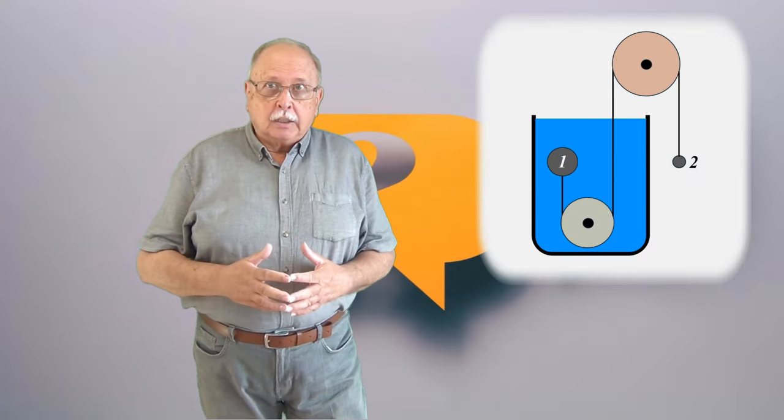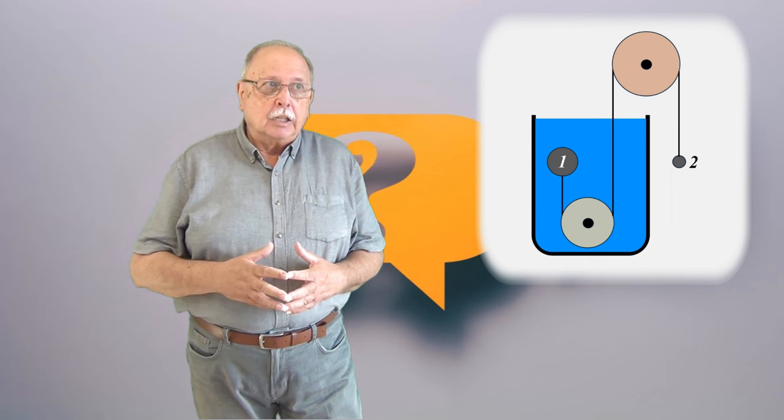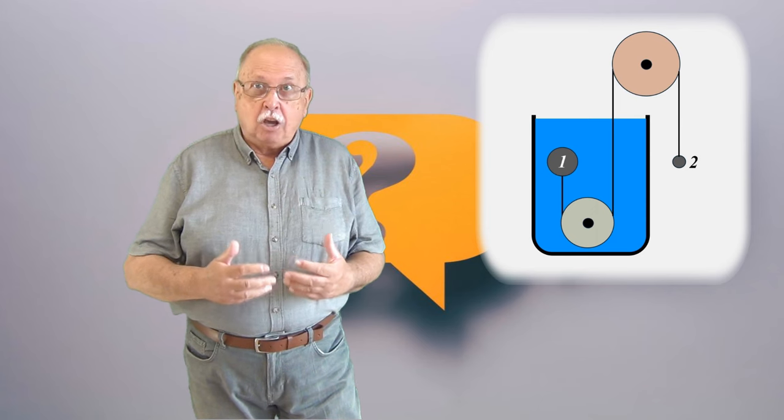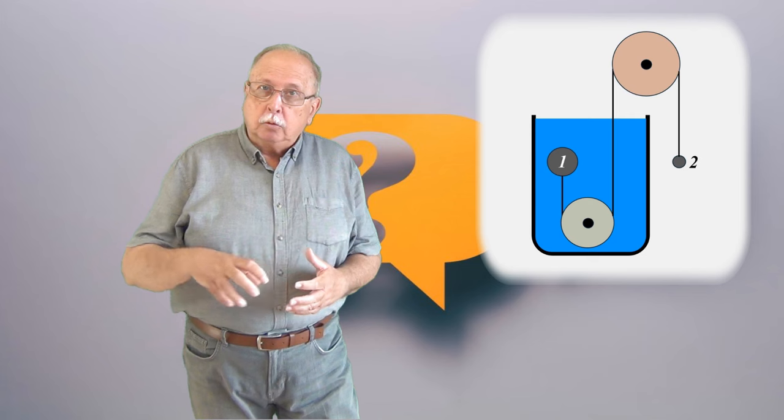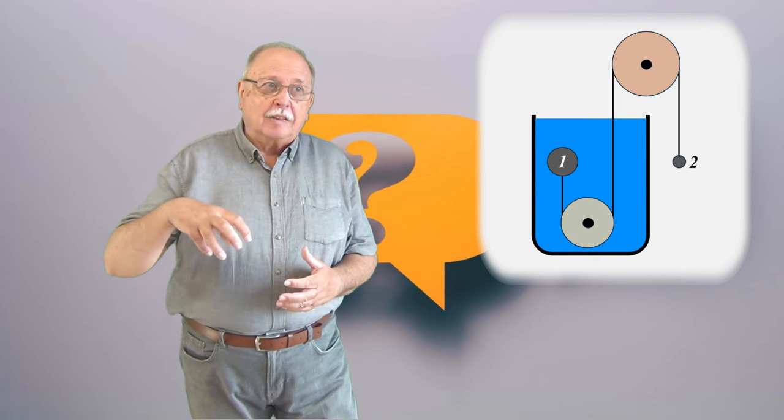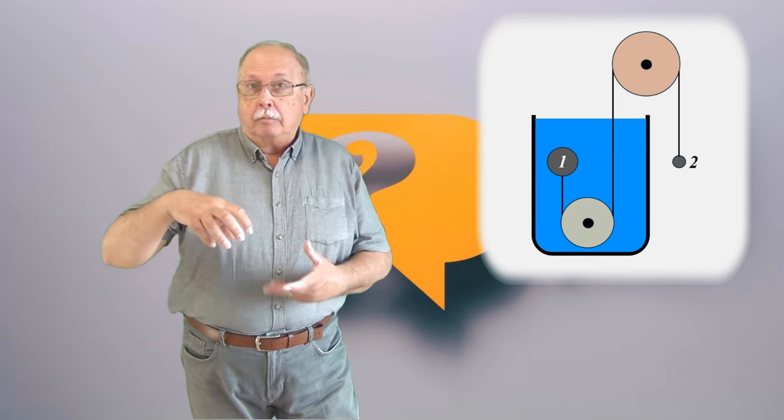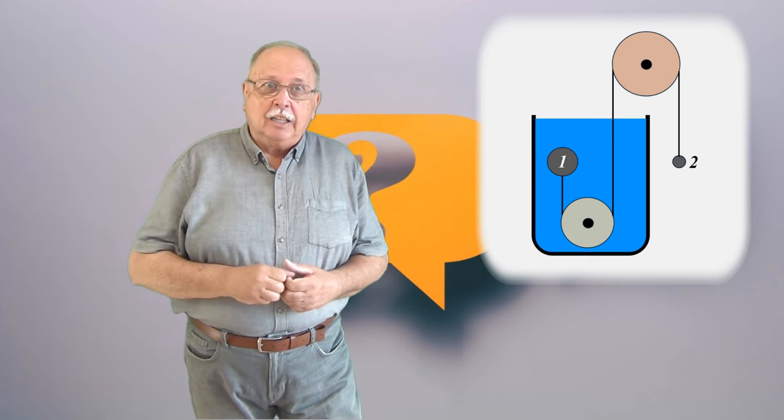Primul lucru care trebuie observat este că bilele sunt confecționate dintr-un material cu densitatea mai mică decât cea a apei. Acest lucru reiese din faptul că bila 1 trage de fir în sus, adică are tendința de a se ridica. Dacă am tăia firul, chiar s-ar ridica.